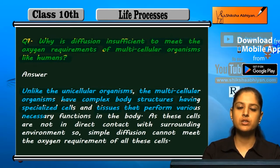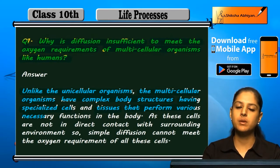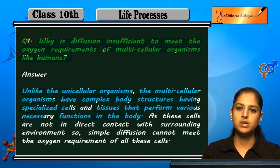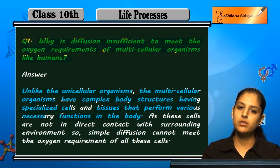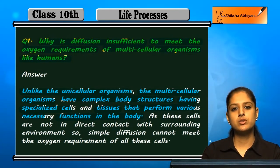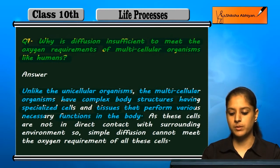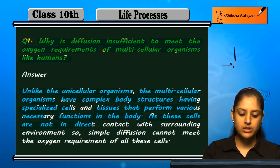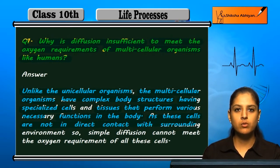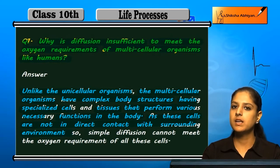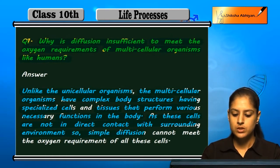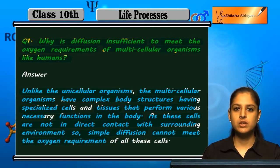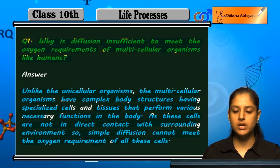Wahanpa specialized cells hootay hain aur tissues hootay hain jo proper functions perform kertay hain aur apne specific functions hootay hain. Ek tissue hain woh ek specific particular function ko perform kertay hain, doosare type ka tissue doosara function perform kerta hai. So yeh cells group banaate hain, tissue form kertay hain, aur yeh jo cells hain unke surroundings — environment ke saath directly connected nahi hootay hain. Isliye jo simple diffusion hai sirf usse oxygen requirement poori nahi ho sakti.